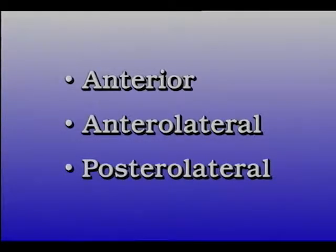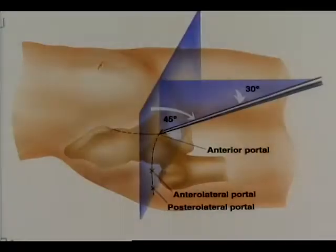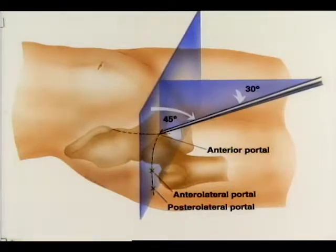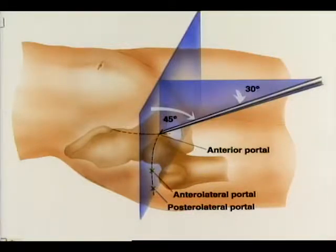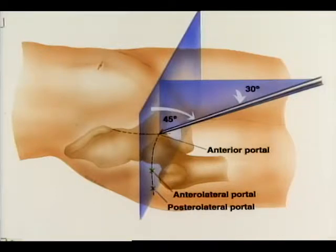The three standard portal positions are anterior, anterior lateral, and posterior lateral. The lateral two portals are positioned over the superior margin of the greater trochanter at its anterior and posterior borders. The anterior portal is sited at the intersection of a sagittal line drawn distally from the anterior superior iliac spine and a transverse line drawn across the superior tip of the greater trochanter.